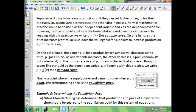Now in example 8 here, suppliers will usually increase production if they can get higher prices for their product. So as one variable increases, the other also increases. Normal mathematical practice would use P as the independent variable and X as the dependent variable. However, most economists put X on the horizontal axis and P on the vertical axis. In keeping with this practice, we write P equals F of X for a supply curve.